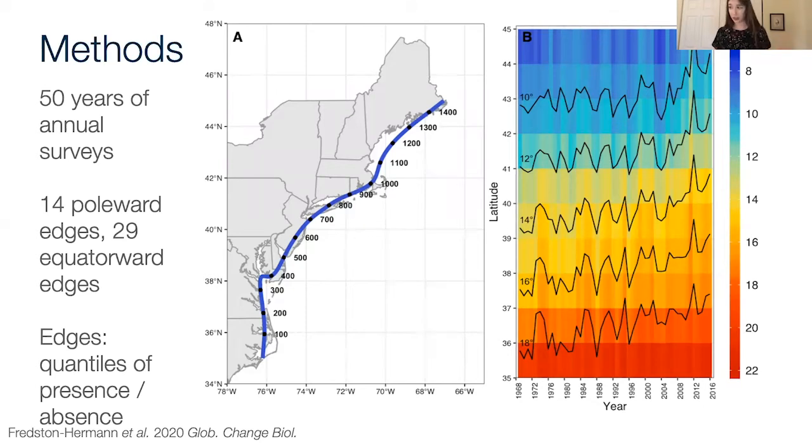Then we compared that to where we would expect to find the range edge if it stayed at a consistent temperature. In the first few years, we estimated the temperature in the part of the coast where an edge was found. And then we looked up every year where along the coast that temperature would be encountered. That's called an isotherm, and that's what's shown on the right in these black lines. Every species had its own edge temperature. And as you can see, for all of them, they're trending up the coast towards the poles. So if an edge were tracking temperature, we would have expected it both to follow these ups and downs and in general to shift poleward.